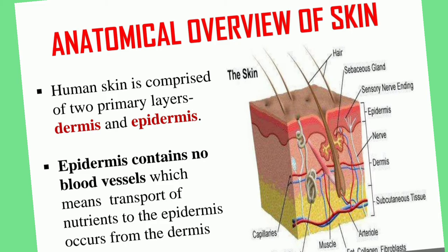Looking at the anatomical overview of the human skin, we can see in the diagram that there are two primary layers: the epidermis and the dermis. 'Epi' means above, so the epidermis is the upper layer and the dermis is below it. The epidermis does not contain any blood vessels, so the transport of nutrients to the epidermis occurs through the dermis layer.